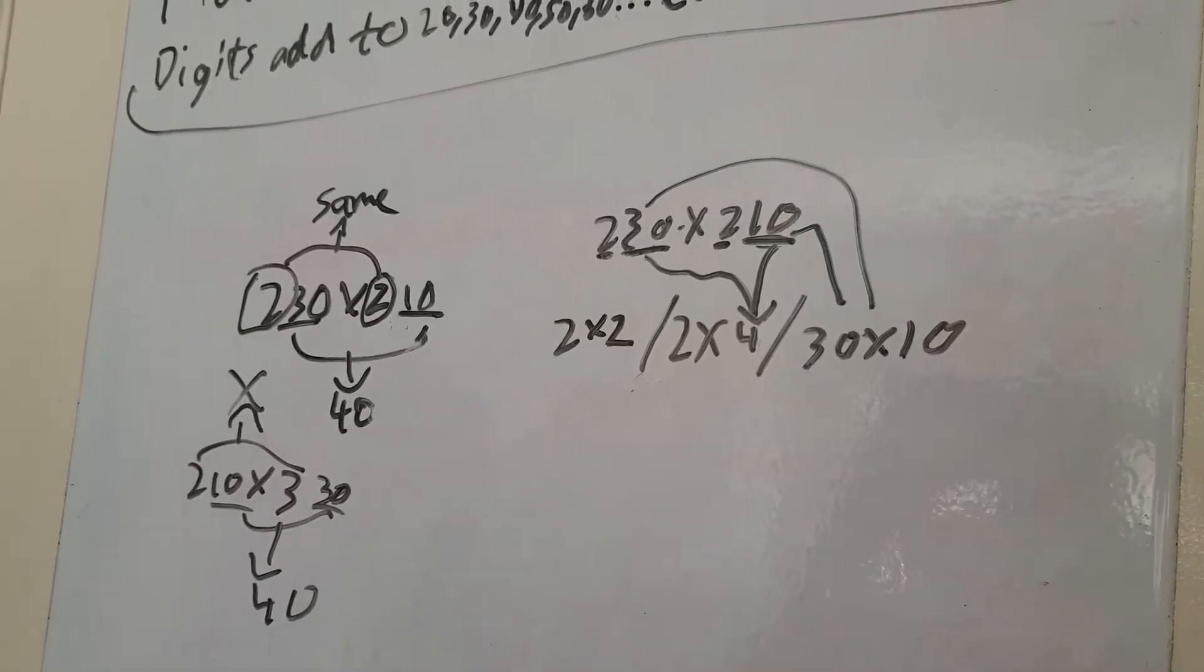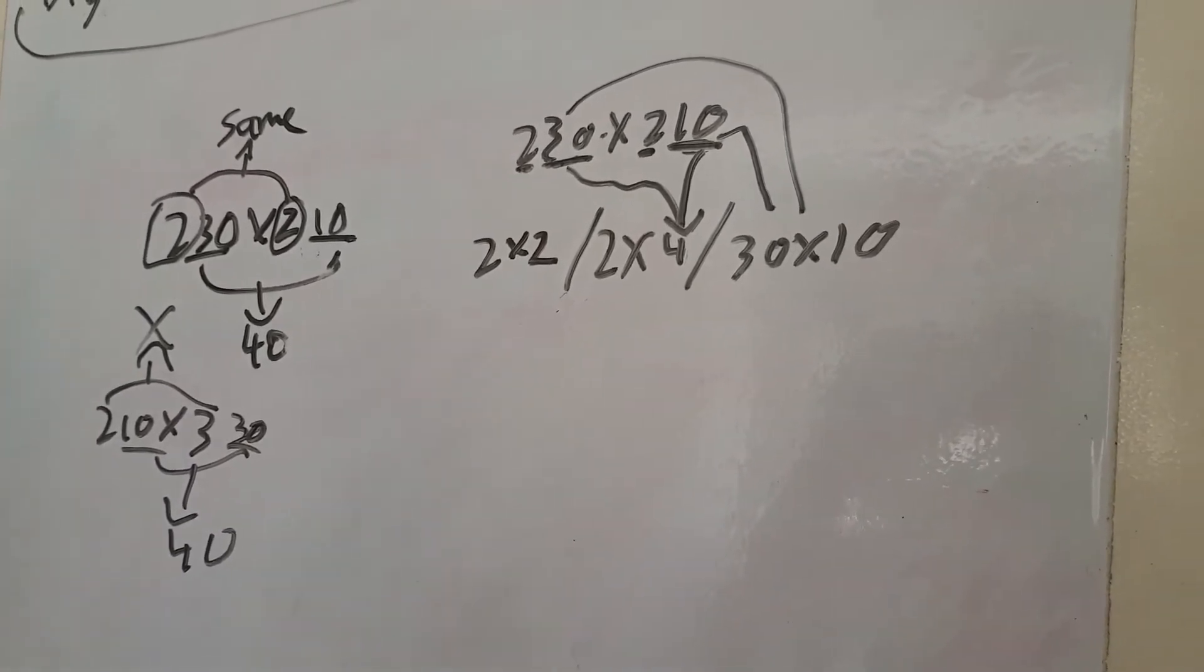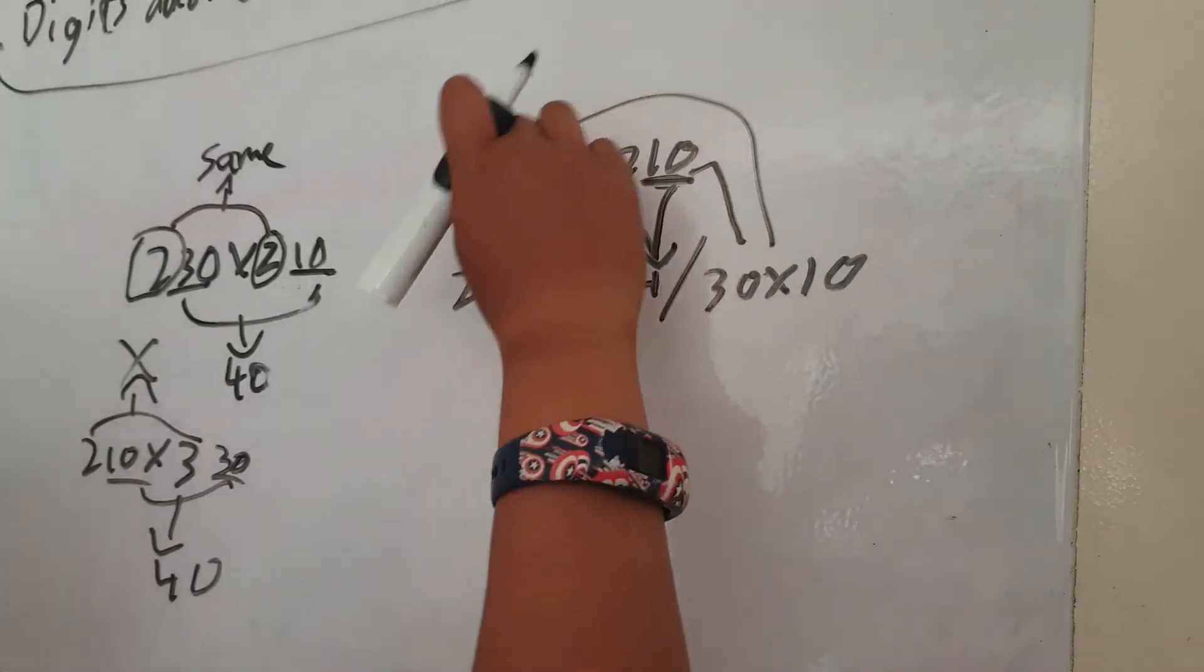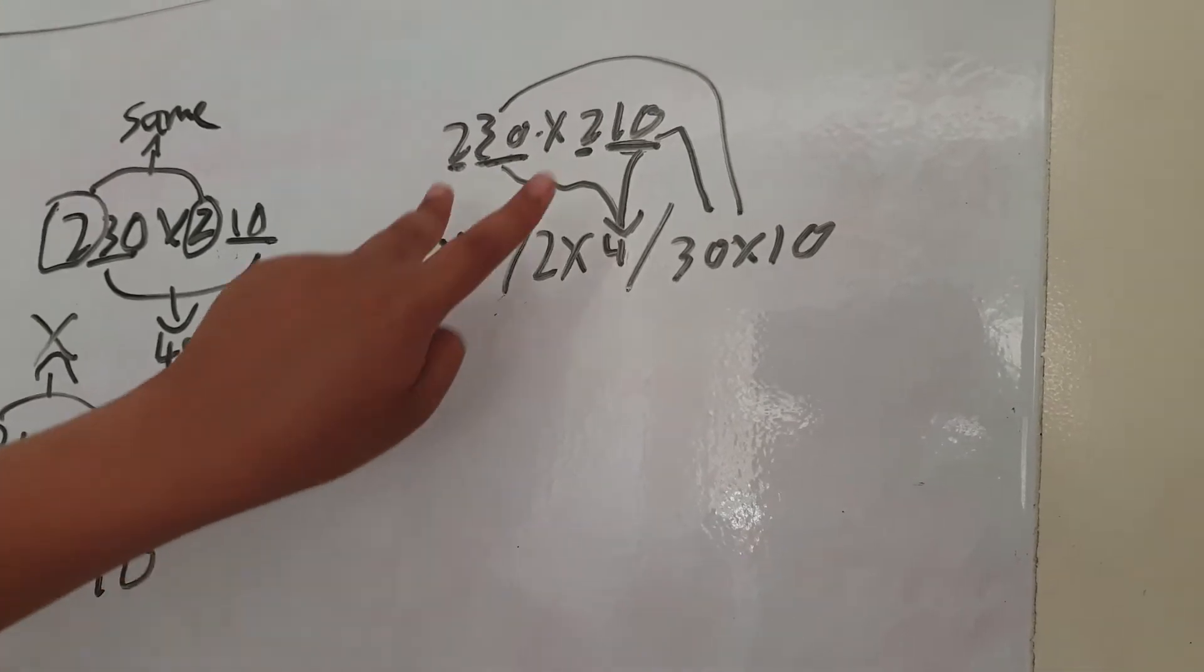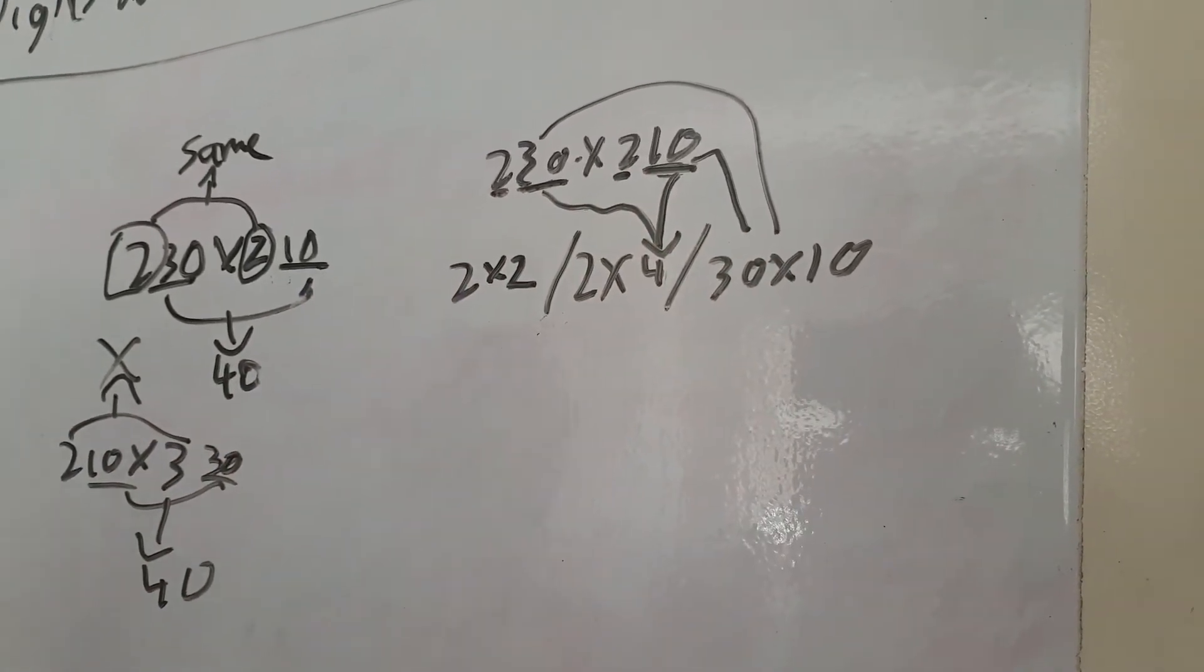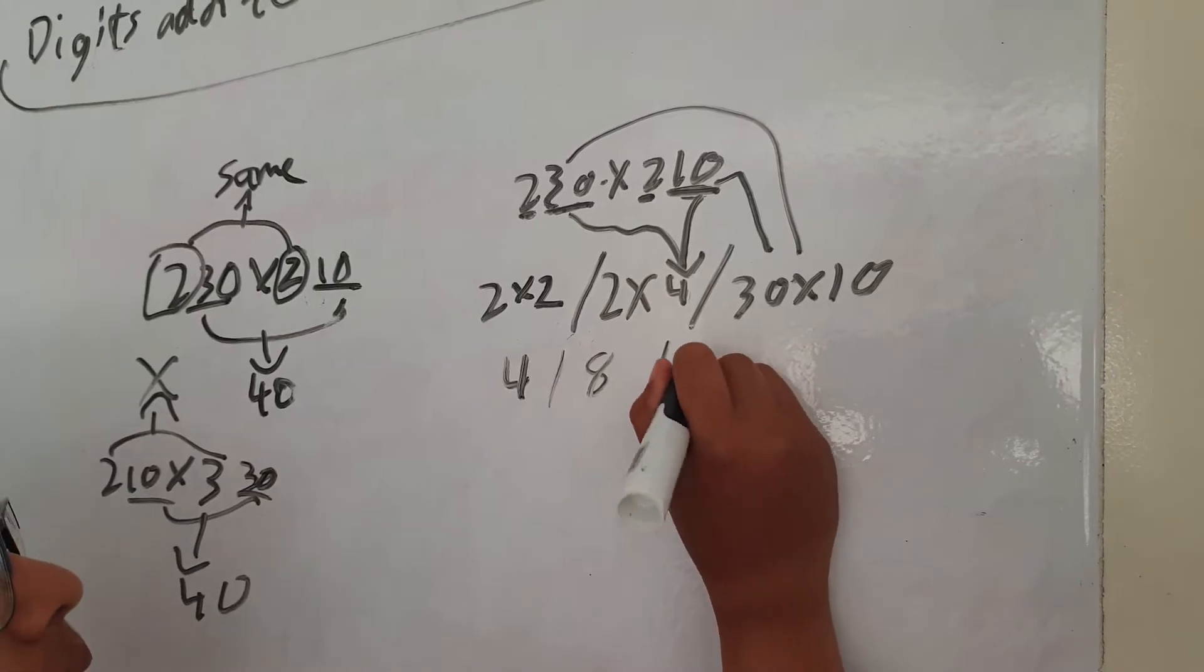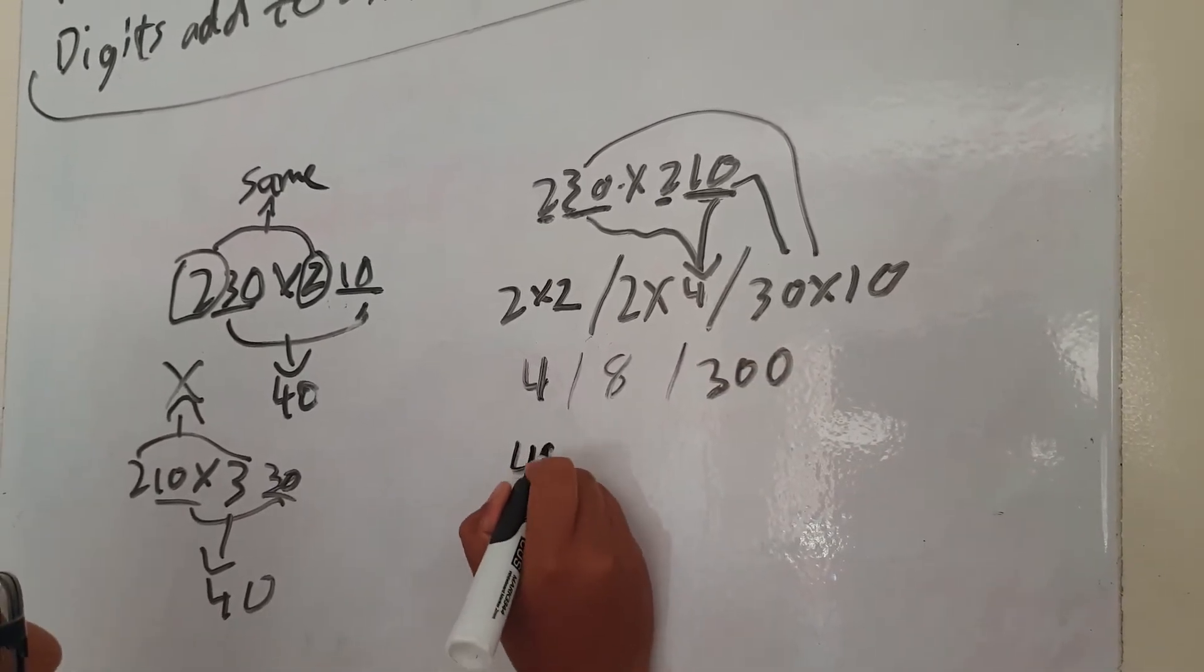It's just the same two numbers times together, and that number times whatever these two add up to minus the zero, and then the end second parts multiplying each other. So now if we do that, it equals 4 slash 8 slash 300, so the answer to that would be 48,300.